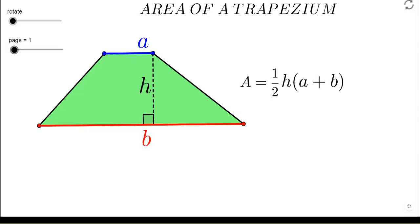Hello, we are going to study the area of a trapezium today. A trapezium is a special quadrilateral with only one pair of parallel sides. Here we can see that side a and b are parallel to each other.